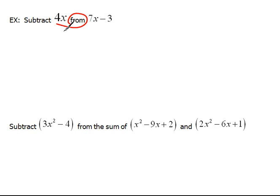When we subtract something from something else, that means we're taking it away from something. So to write this we'd have to take something and then take away 4x. Well, that 7x minus 3 is what we're going to take it away from. So when we rewrite that, it becomes 7x minus 3 minus 4x.